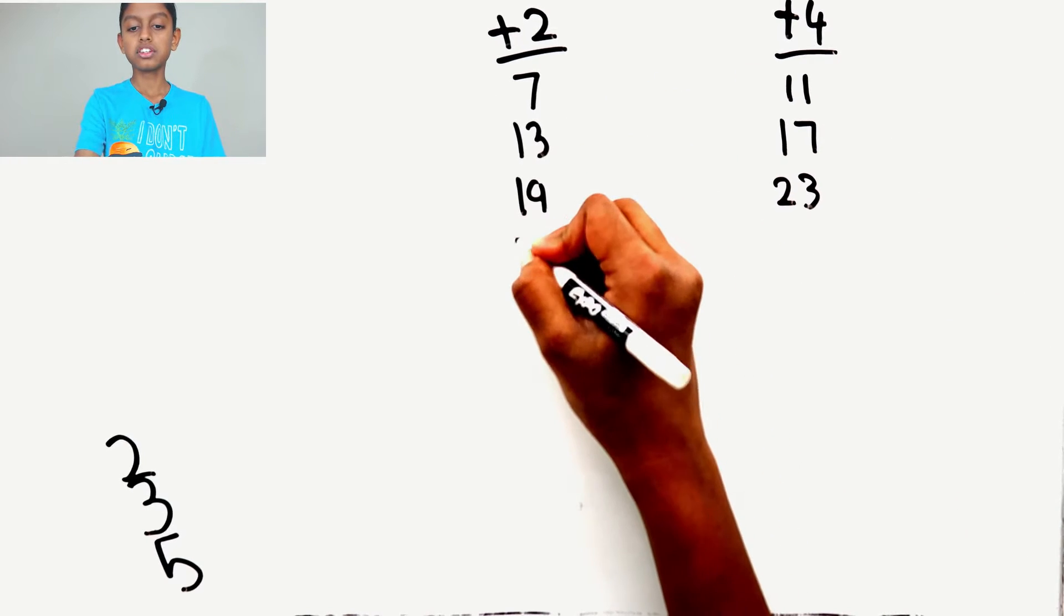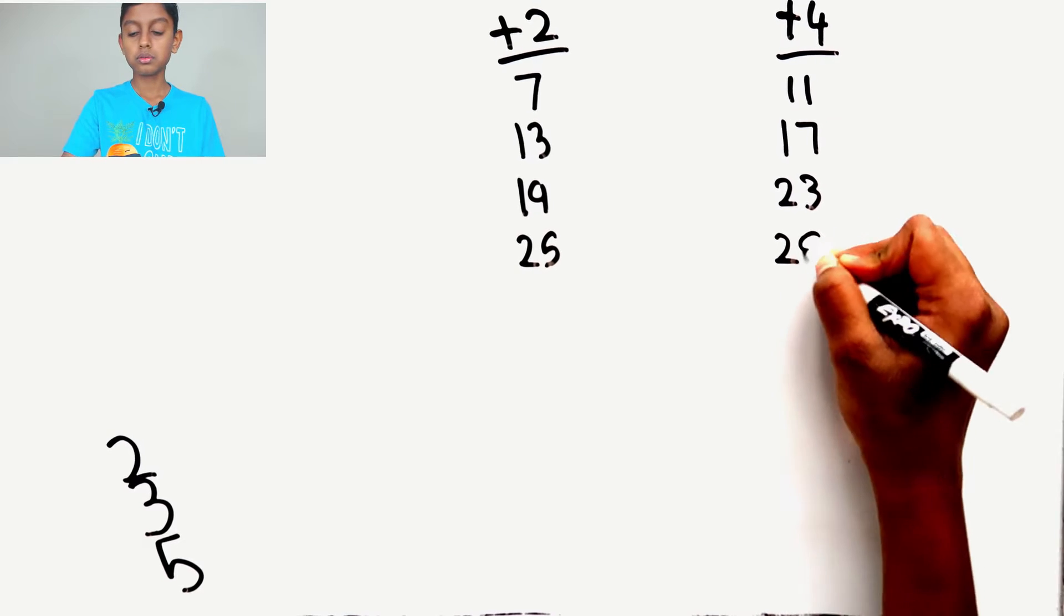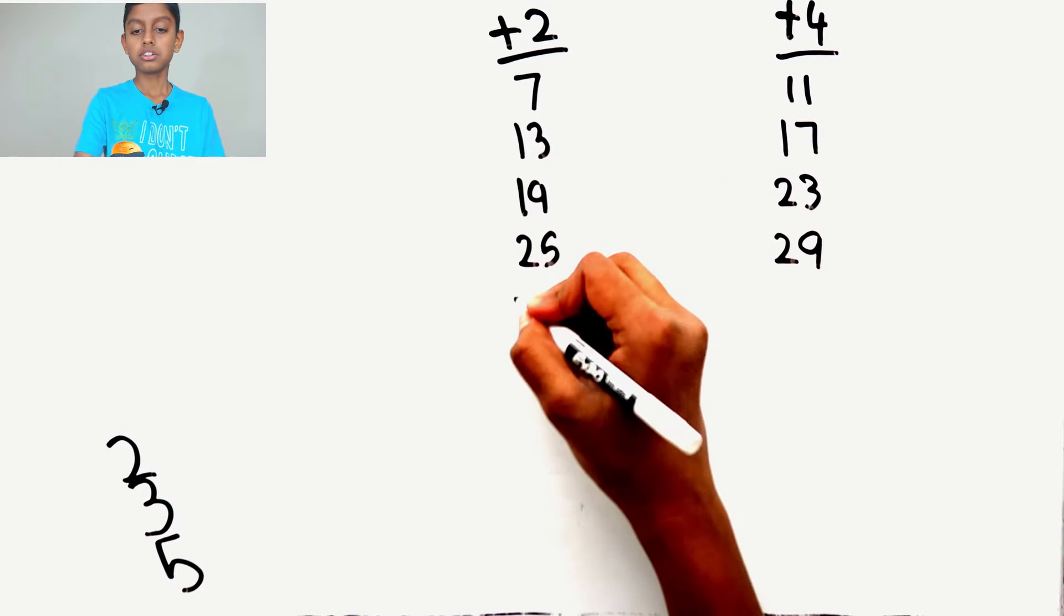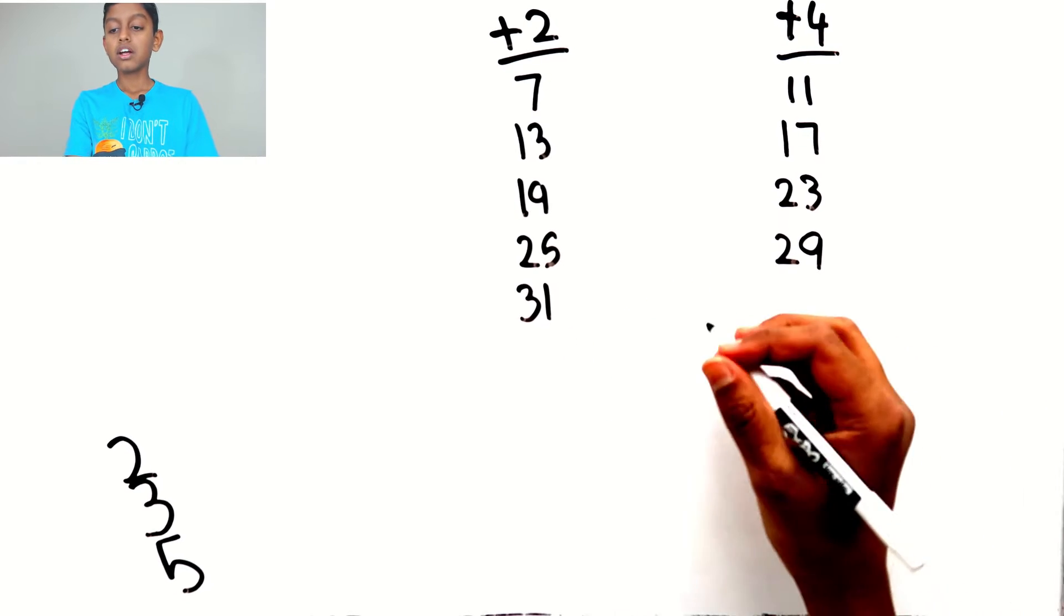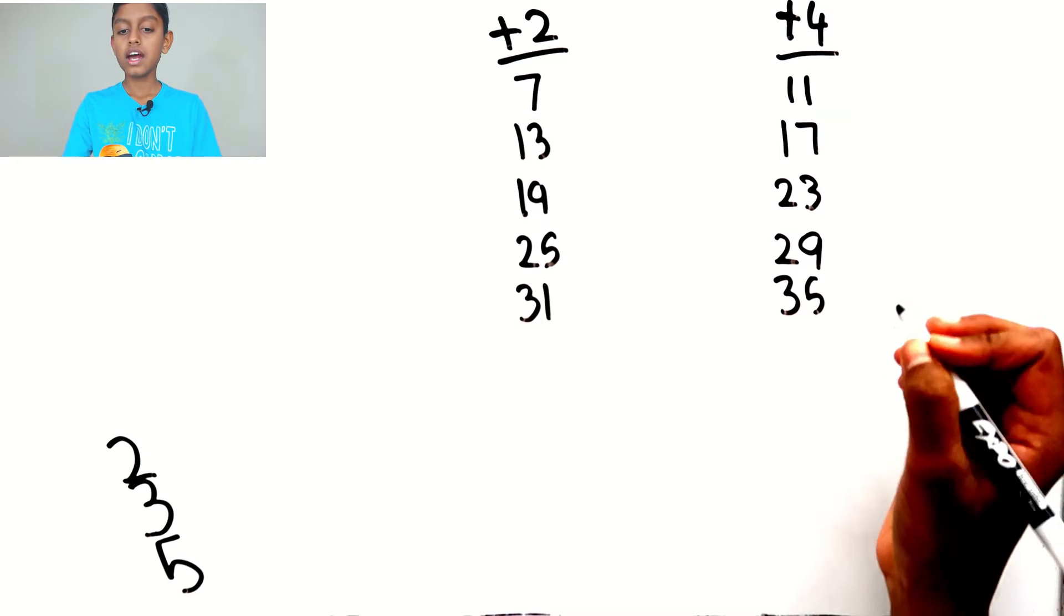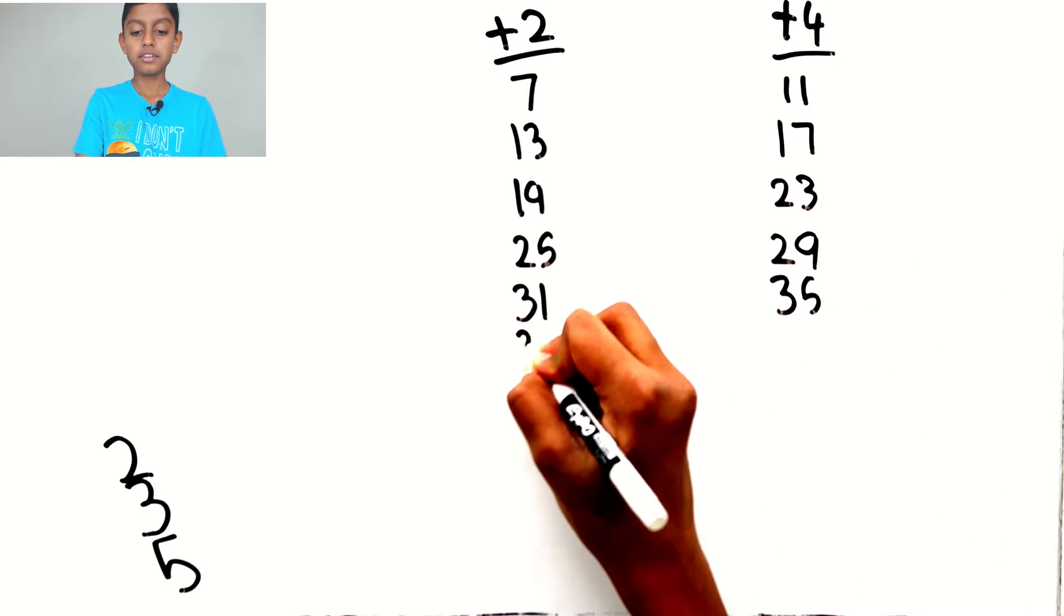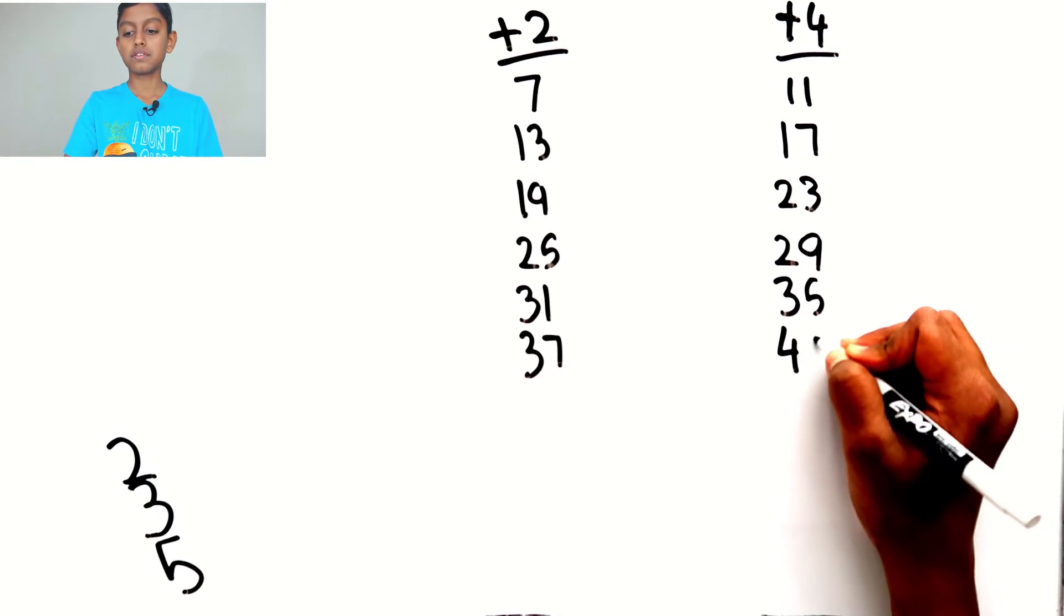Add 2 to get 25, add 4 to get 29, add 2 to 29 to get 31, add 4 to 31 to get 35, add 2 to 35 to get 37, add 4 to 37 to get 41.